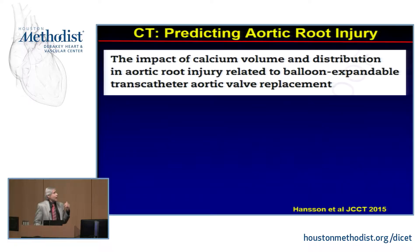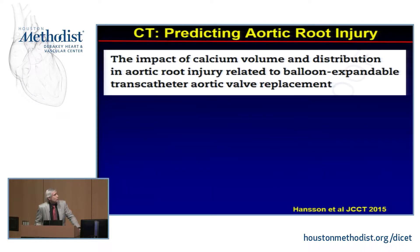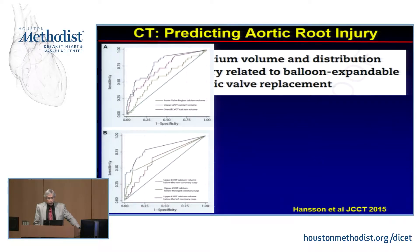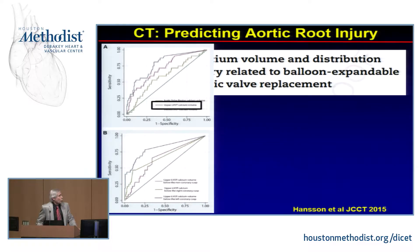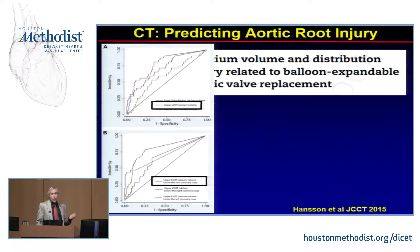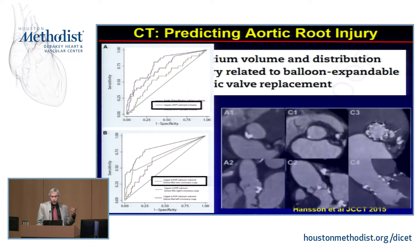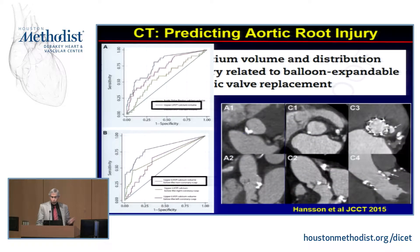CT can also be useful for looking at how much calcium there is in the aortic root and annulus area and how that might affect aortic root injury during valve placement. These are data from Hansen looking at what parameters were important.